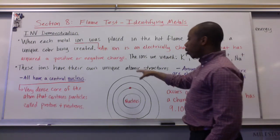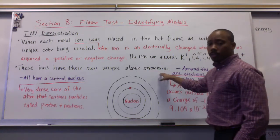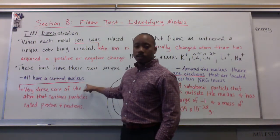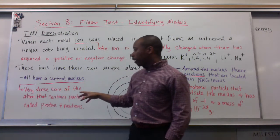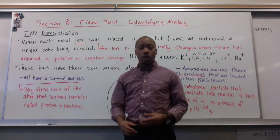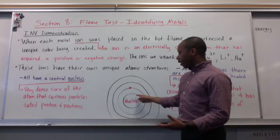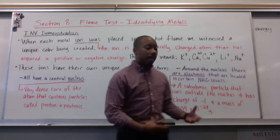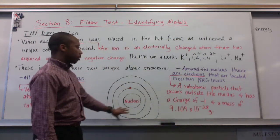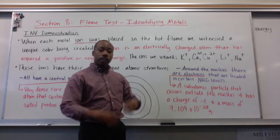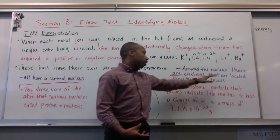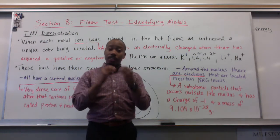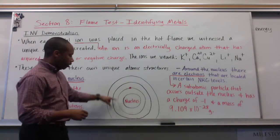These ions have their own unique atomic structure. All atoms have this atomic structure — they all have a central nucleus. The nucleus is the very dense core of the atom that contains particles called protons and neutrons. In our picture here, the nucleus would be the central part of our atom. Another part of our atom is the electron cloud outside of the nucleus, where electrons are located in certain energy levels.